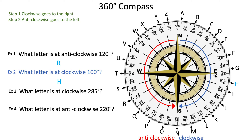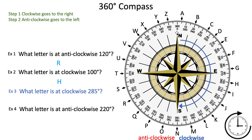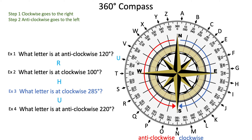Let's move our cursor to the starting point. The next question: what letter is at clockwise 285 degrees? We're going clockwise — to the right — so we use the outer numbers. Count up: 0, 10, 20, 30, and so on, through 90, 100, 110, 120, continuing until we reach 270, 280, and finally 285, which is halfway between 280 and 290. Our answer is the letter U.